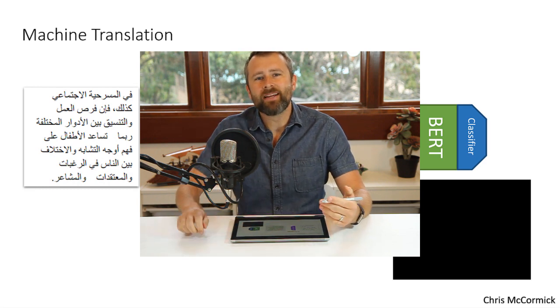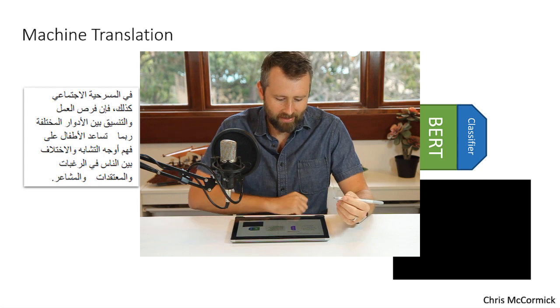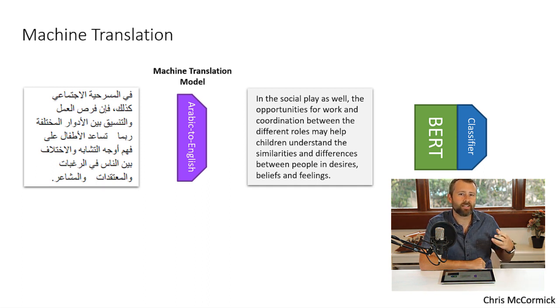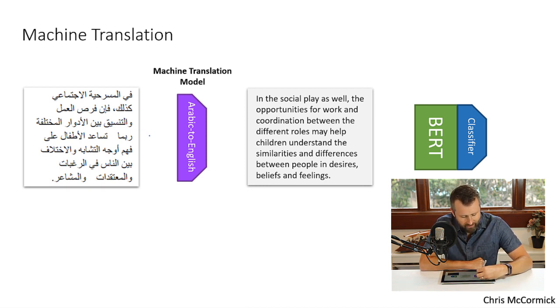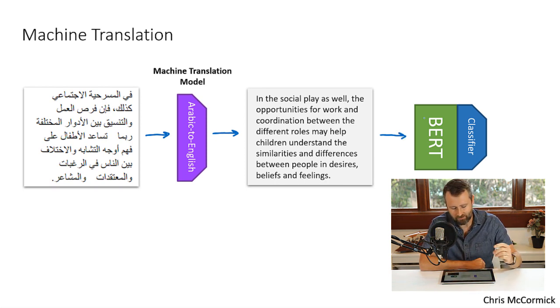There are a couple ways we can try to use existing machine translation models to help with the language problem. I'll focus on multilingual models in this video, but I'll mention a couple of translation techniques so you're aware of them. The first is that you could use a translation model to translate your application text into English and then use English BERT. So we could take some Arabic text, feed it through a translation model, get English text out, and feed that into English BERT for classification.